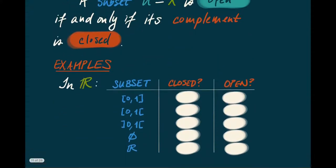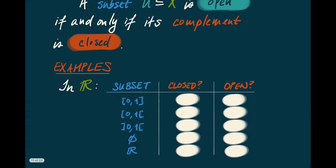Let's look at some examples. In R, if I look at the subset consisting of the closed interval [0,1], we better hope that this is actually going to be a closed subset. And indeed it is. If I contemplate the closure of [0,1], I get [0,1] again — nothing changes — so we really are a closed subset. On the other hand, it's certainly not open, because there are points like 1 that are close to the complement of [0,1] inside our set.